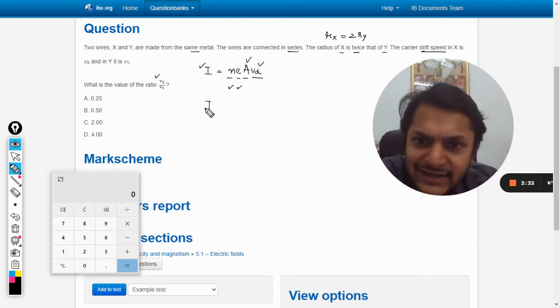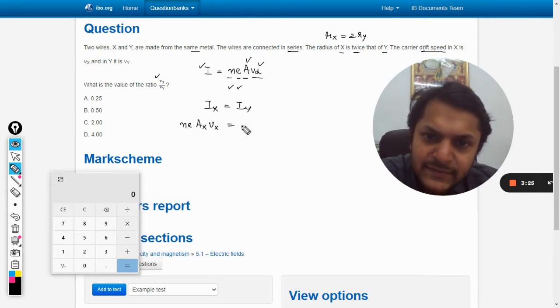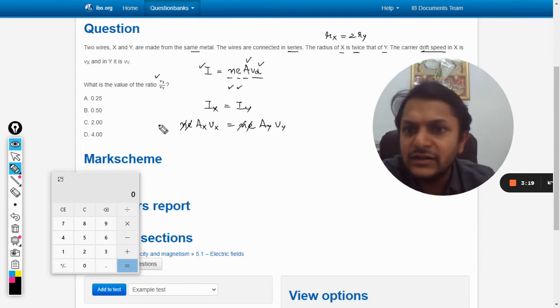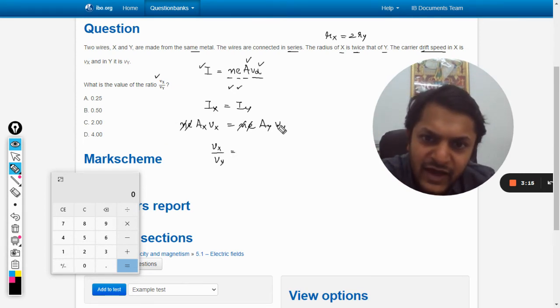So Ix is equal to Iy. So n e times the area of X and v of X equals n e times the area of Y and v of Y. n and e got cancelled, so vx divided by vy is equal to Ay by Ax.